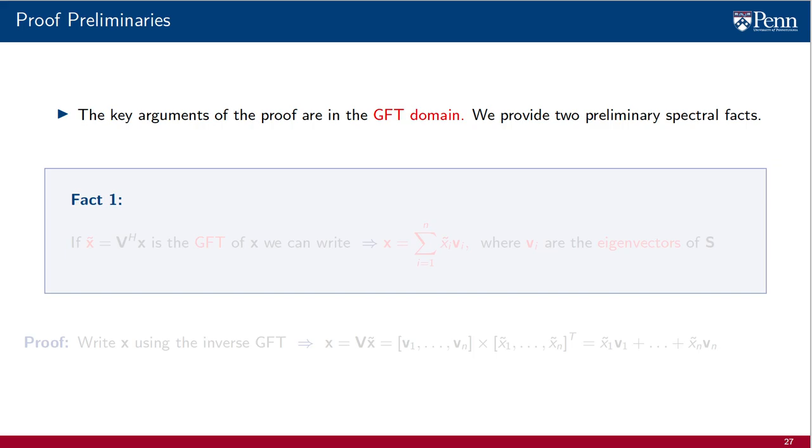The first fact is about writing the signal x in terms of the components of its GFT. If we are given the GFT x̃, we can recover x as the sum of x̃ᵢ times vᵢ, where the vᵢ are the eigenvectors of the shift and the x̃ᵢ are the entries of the GFT. The sum is over all eigenvector indexes.